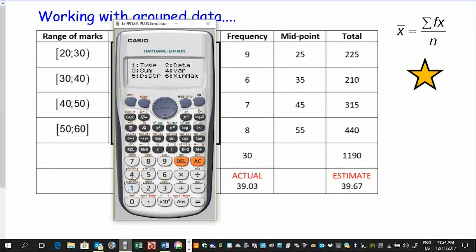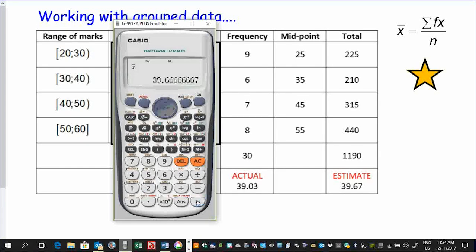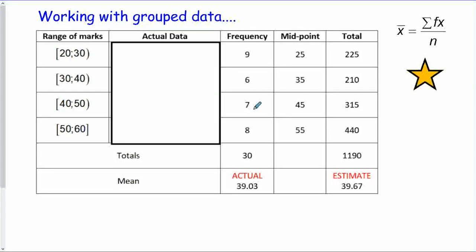Once corrected, checking n gives 30 data items as expected. Going to Shift Stat, variables, and selecting the mean gives an estimated answer of 39.67, compared with the actual answer of 39.03 — a reasonable estimate. The formula working here is: frequency times value — so 9×25 plus 6×35 plus 7×45 plus 8×55 — all divided by n.